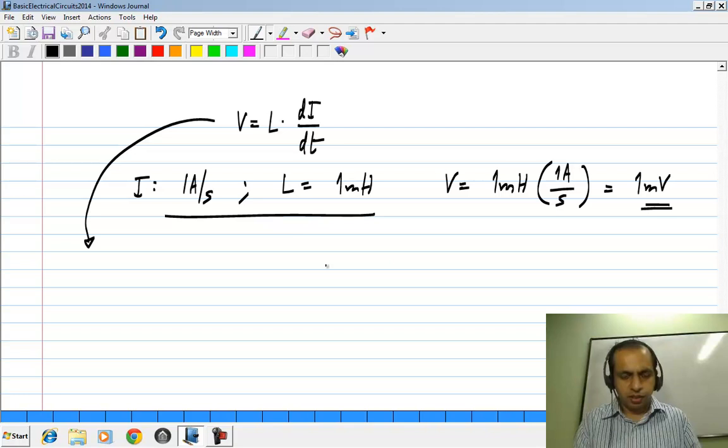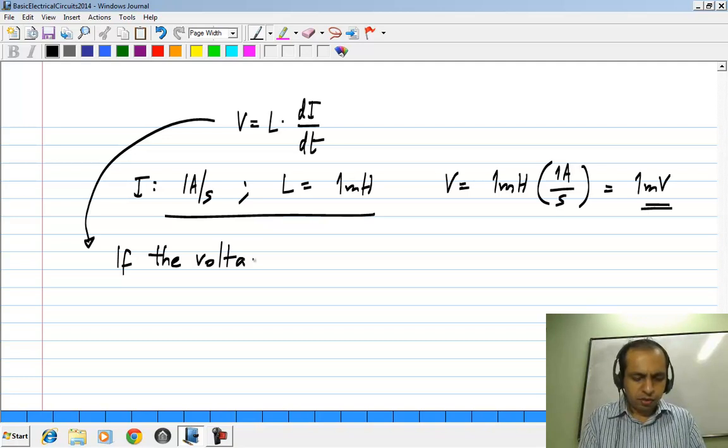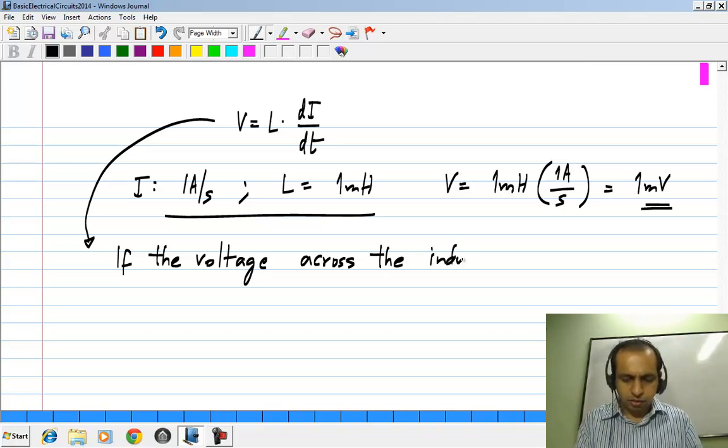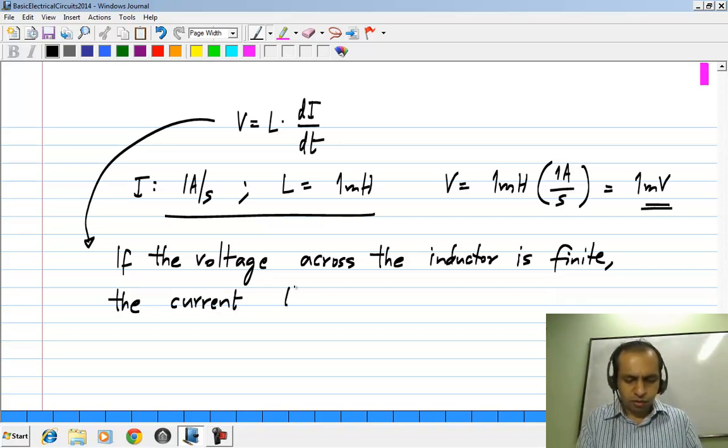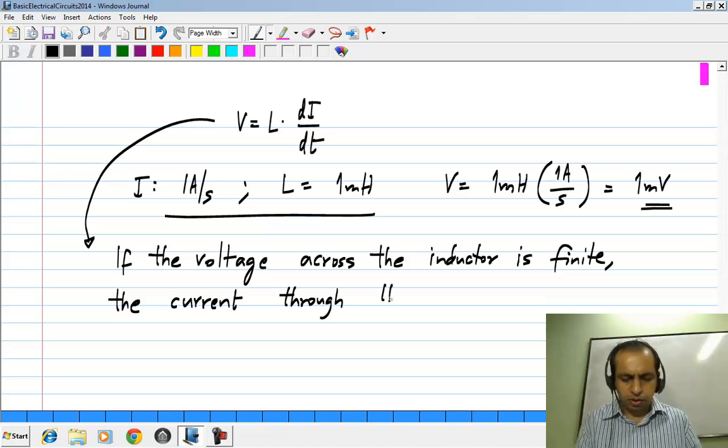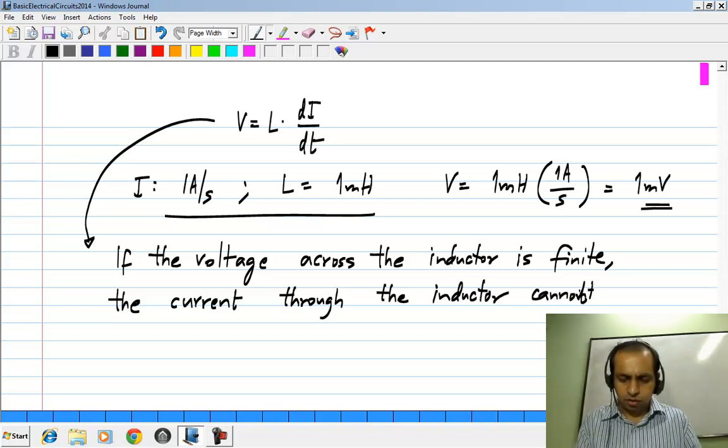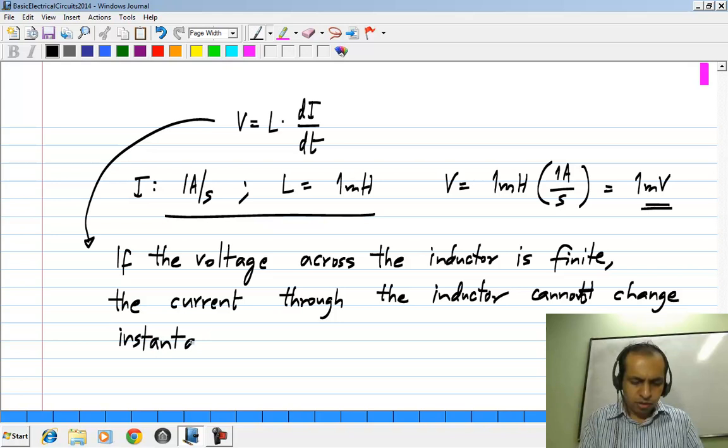This also says another thing. It says that if the voltage across the inductor is finite, the current through the inductor cannot change instantaneously.